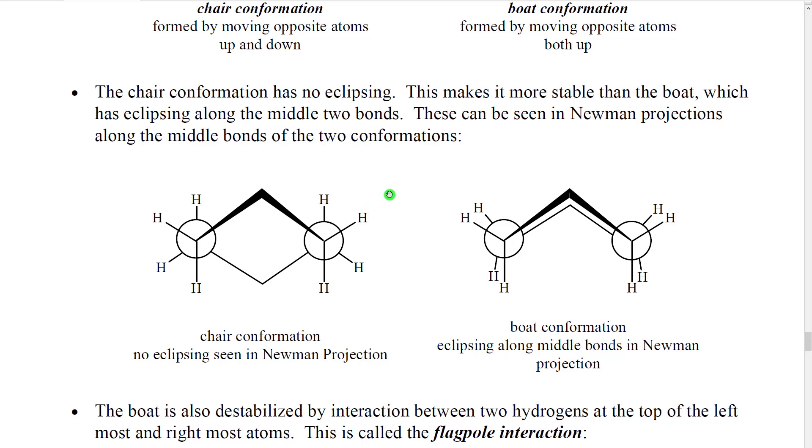The important thing to note here is that both of these bonds are staggered. There is no eclipsing. Technically they're gauche to each other, but it turns out there is no staggered conformation available to this molecule that would be more stable than this sort of staggered gauche type conformation.